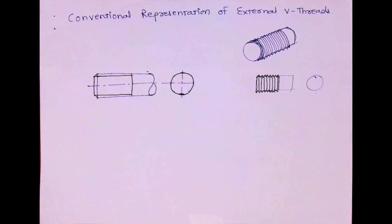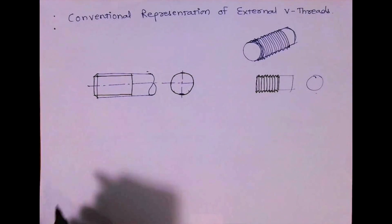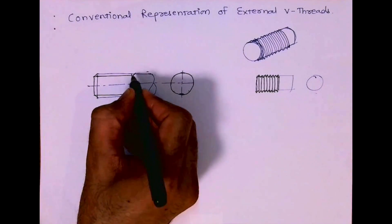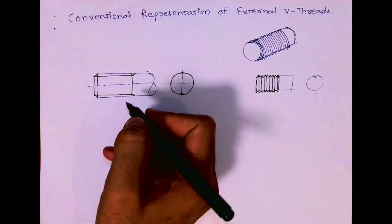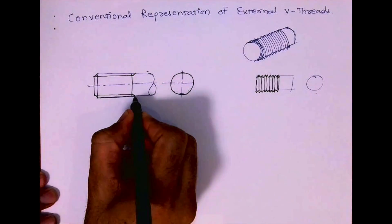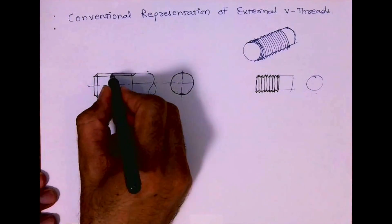Here you will have the runoff angle, which will be 45, 30, or 60 degrees. Hatching will come here.